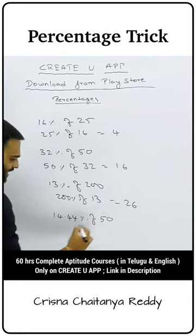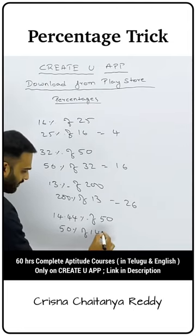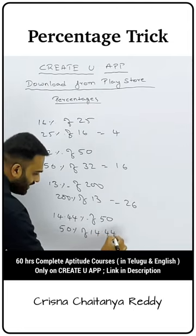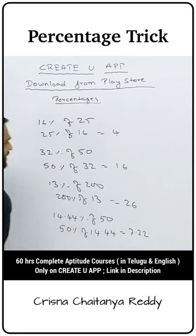You can get 15.44% of 50 by flipping it to 50% of 15.44. That means 7.22.